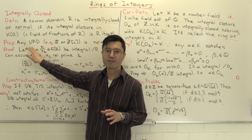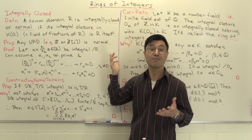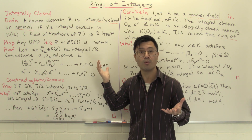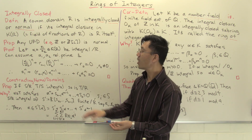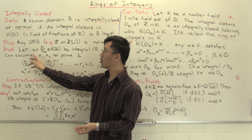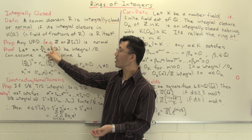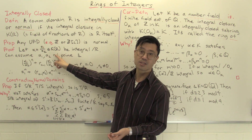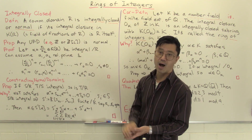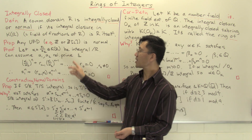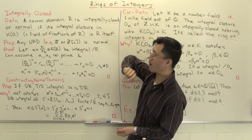If you have any unique factorization domain, such as Z or Z[R], then it is normal. So let's see why that's true — it's quite an easy proof. Suppose alpha equals alpha₁ over alpha₂, a fraction inside this fraction field, and suppose that's integral over R. So we want to show that this then has to be actually in R.